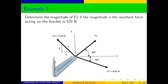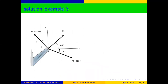Determine the magnitude of F1. The magnitude of the resultant force acting on the bracket is 520 newtons. This is the diagram. In this question, we have been given the resultant force, and we have been given three forces, and we are asked to find the magnitude of force F1.